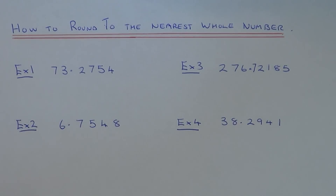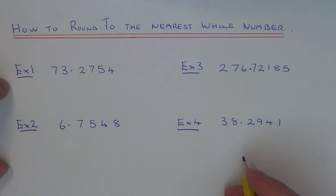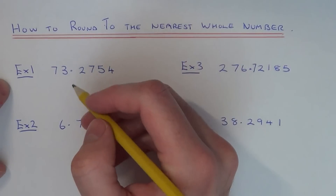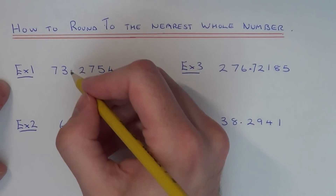Today I'm going to show you how to round a number off to the nearest whole number. So let's have a look at our first example, example 1. We've got to round 73.2754 to the nearest whole. If we round it to the nearest whole, we're cutting the number off after the units column.